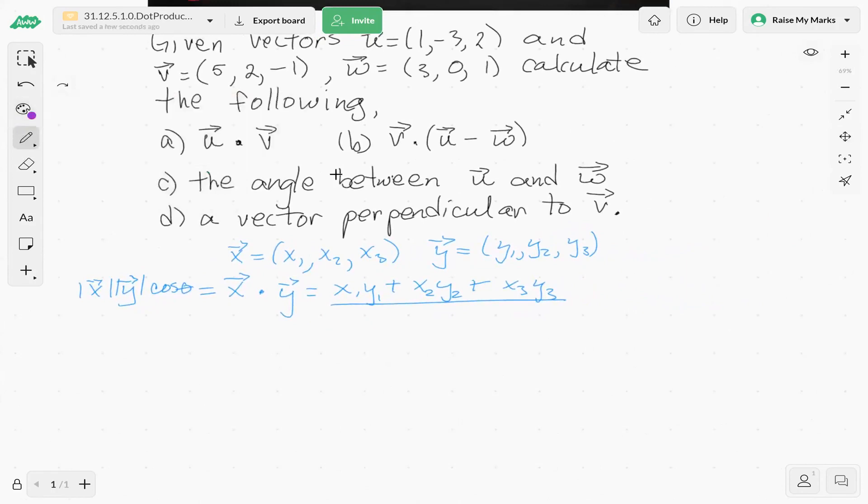So first question, a dot product of u and v. So u is the vector (1,-3,2), dot product with v, which is (5,2,-1).